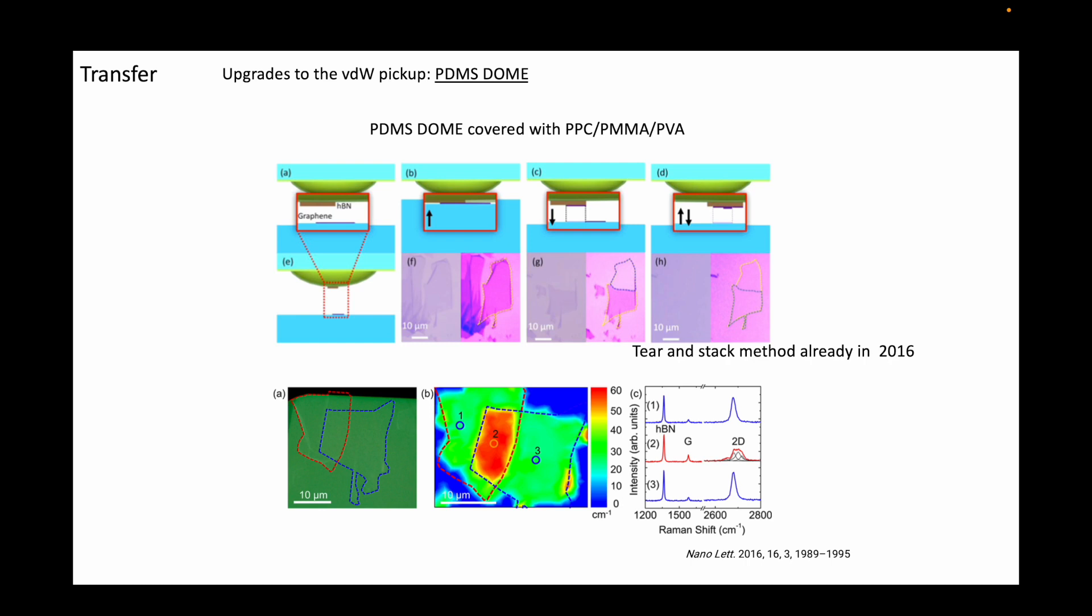In this paper, the authors already report on the fabrication of twisted bilayer graphene with controlled twist angles, which was a necessary step for the discovery of magic angle graphene.